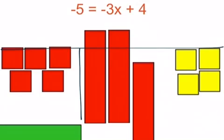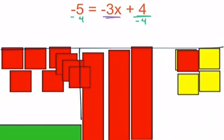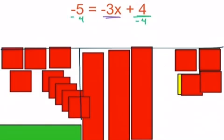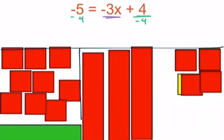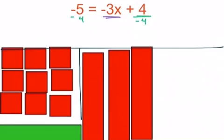Now it's time to solve for x. I need to isolate the variable, so I start with the number by itself: plus 4. To do the opposite, we subtract 4 from each side. On the right side, subtracting 4 means placing 4 red units. Whatever we do to the left side, we have to do to the right side — so subtract 4 there too. Note that on the left we have a negative being subtracted from a negative, which increases the negative and moves it further down the number line. After canceling, we should get negative 9 on the left equals negative 3x on the right.